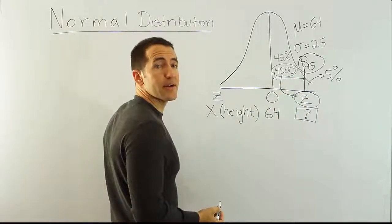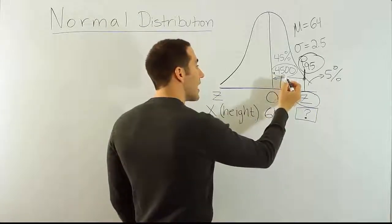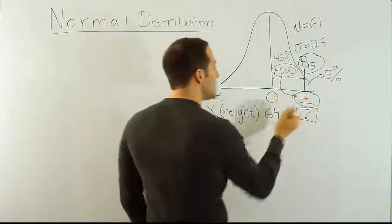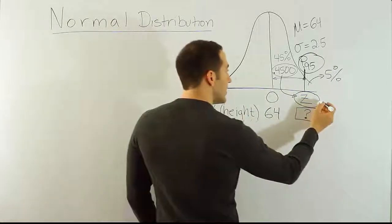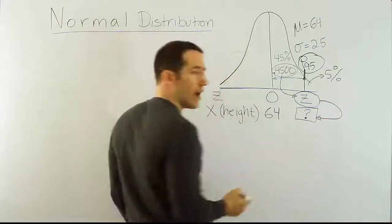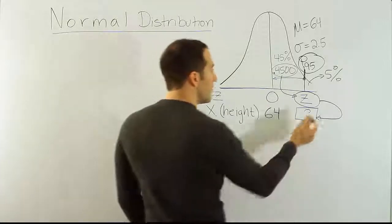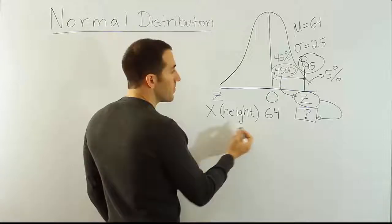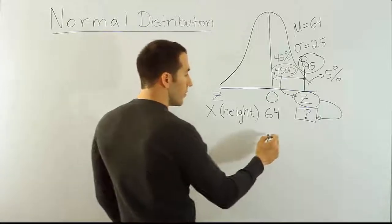But we also should realize, of course, that every area is associated with a z-score. That has to also be true, right? So if I looked up 0.4500, I would find the associated z-score. And if I knew that z-score, it should be a simple step to get from that score to a height. Because I know there's a formula that connects z-scores and x-values.